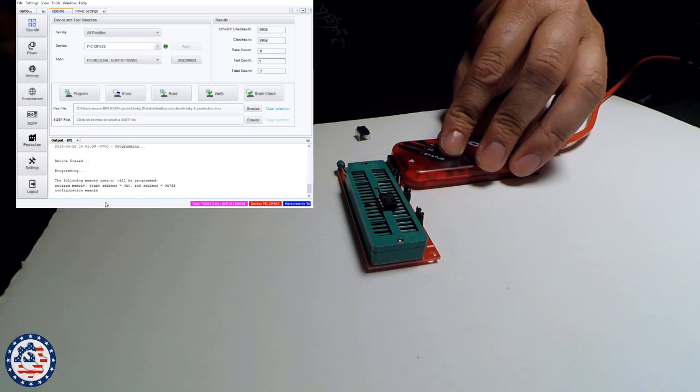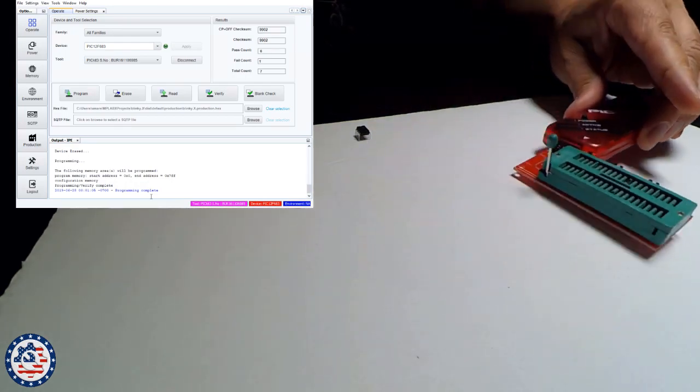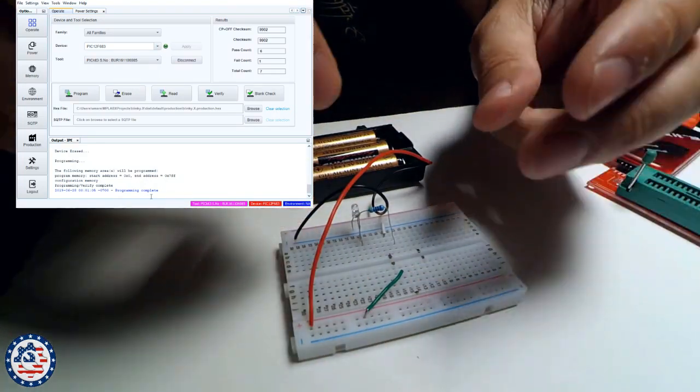And I can program. Memory. Programming complete. So now both the chips have got the same firmware. One I programmed from the hex file. The other, the second one, I programmed from the chip itself. I copied it.